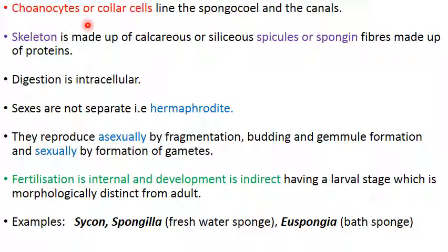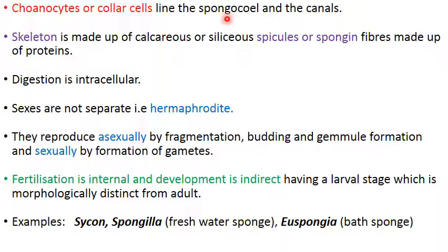Another characteristic feature of sponges is the presence of collar cells called choanocytes. These collar cells have a collar-like structure with a flagellum, and they line the spongocoel — the central cavity — as well as the canals.